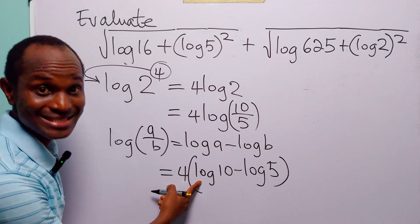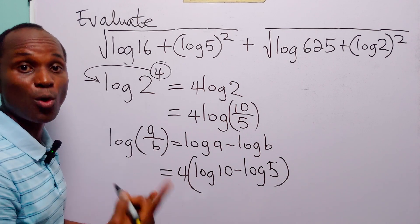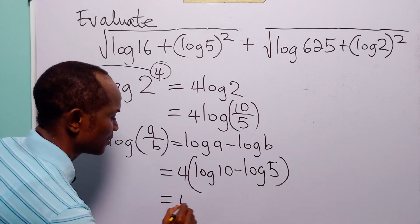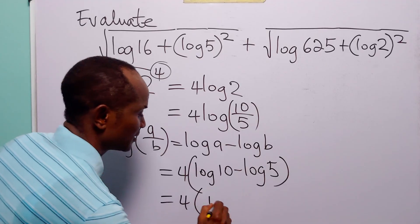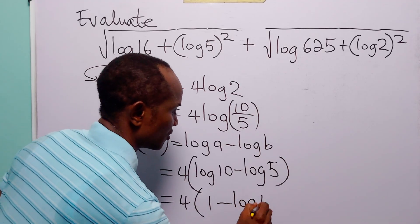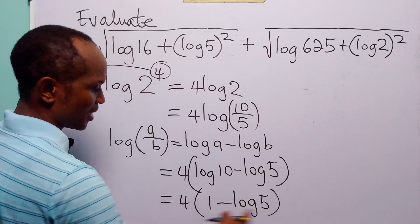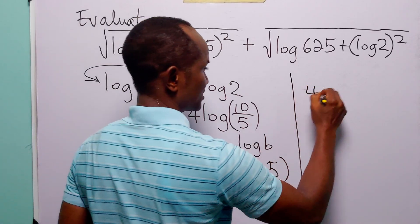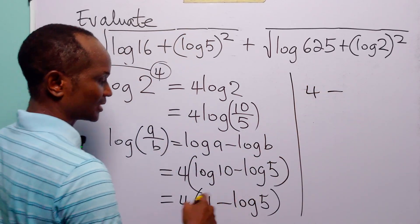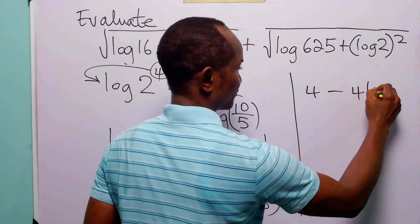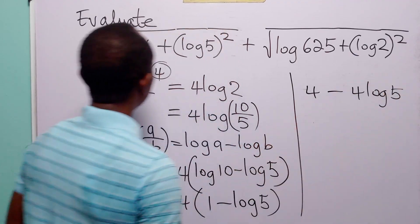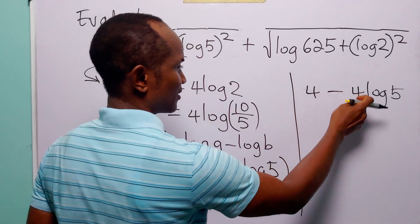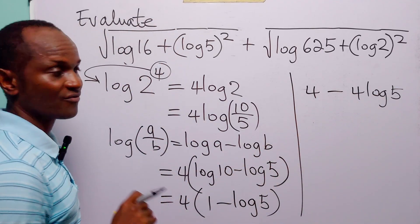Here we have log base 10 of 10, which is equal to 1. So this is equal to 4 times (1 minus log 5). When we expand this bracket we have 4 times 1, which is 4, minus 4 times log 5. So log 16 is equal to 4 minus 4 log 5.